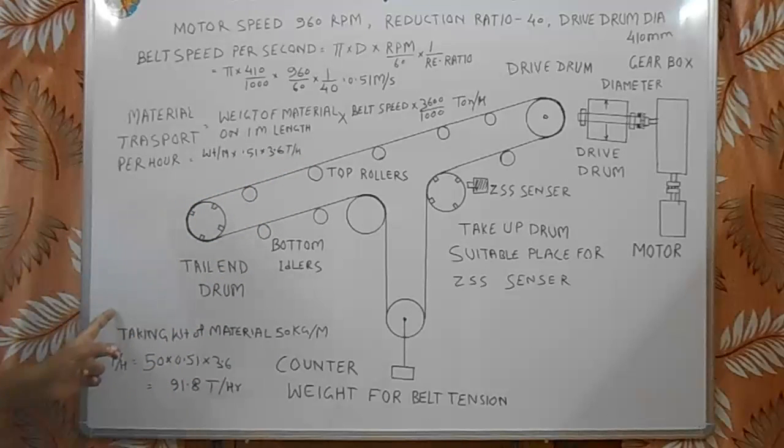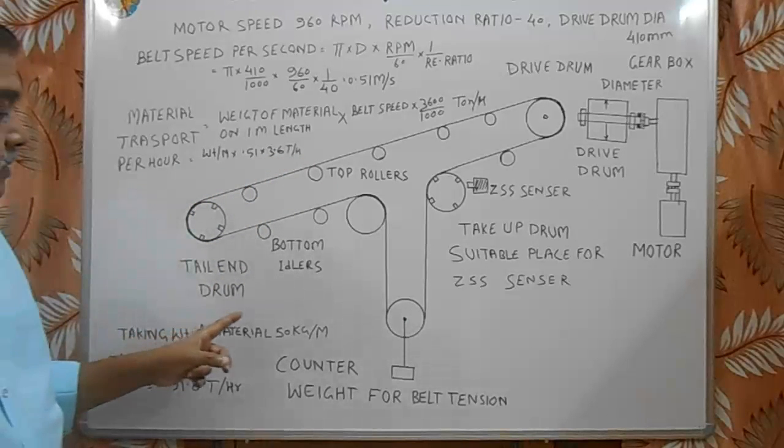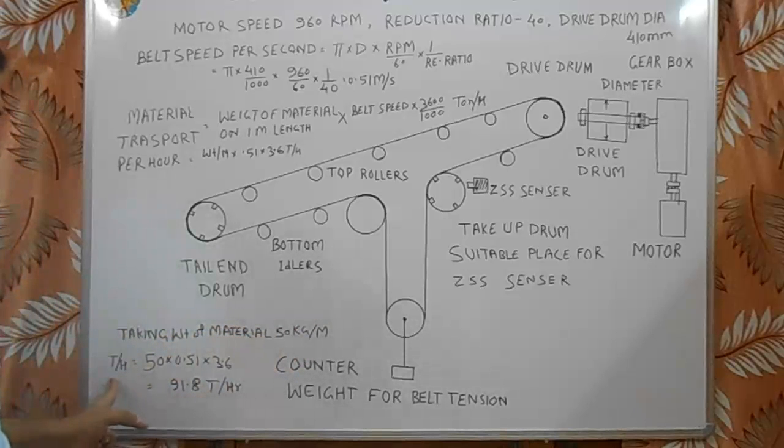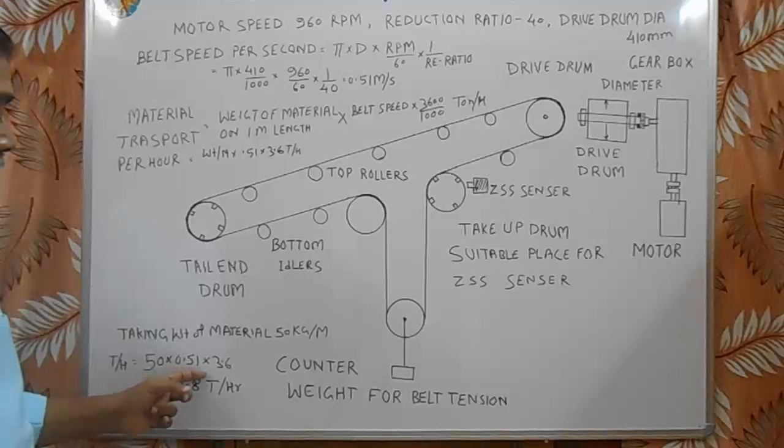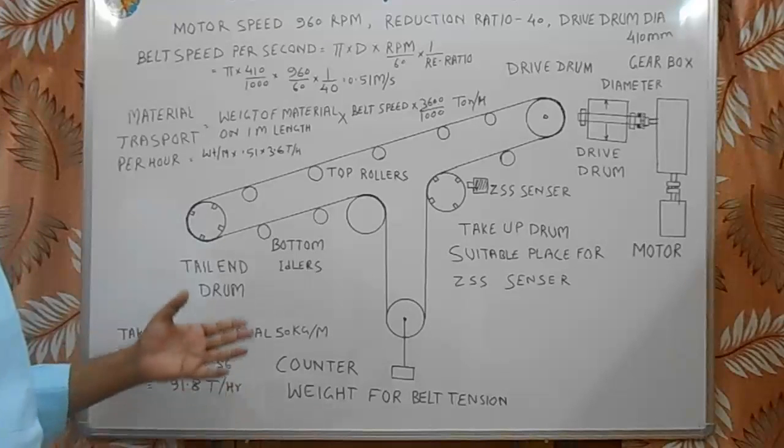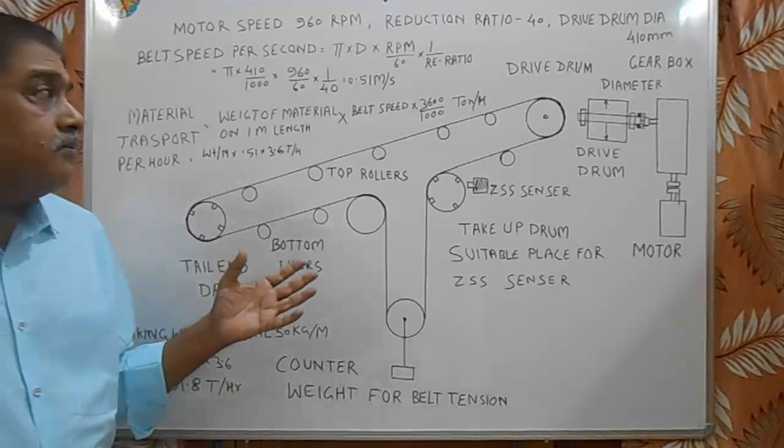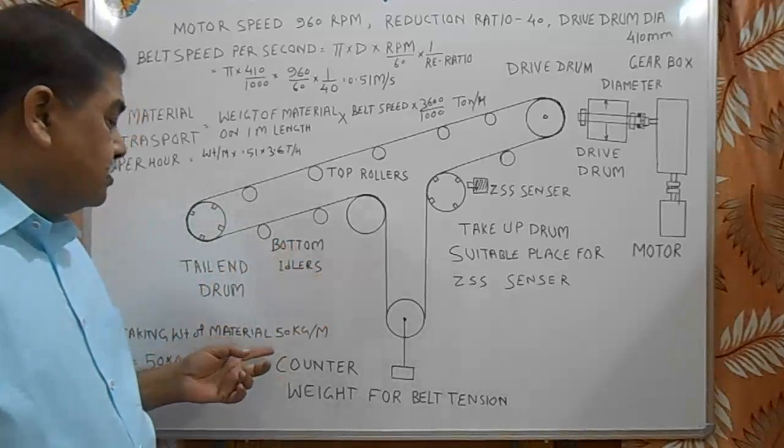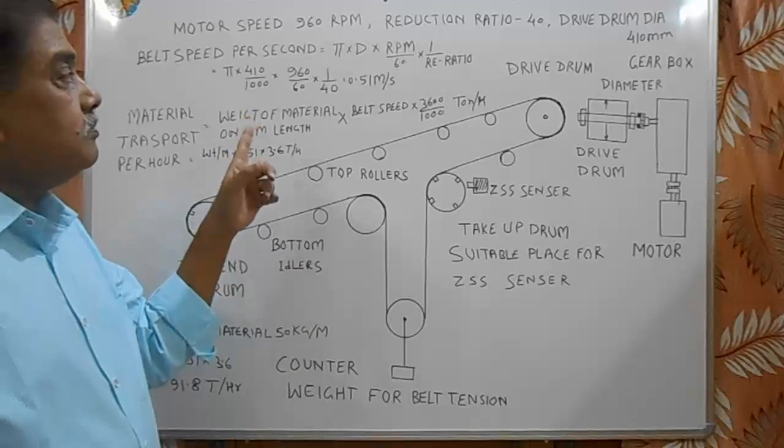Here we are taking weight of material 50 kg per meter. So calculating, weight per meter is equal to 50 into 0.51 into 3.6 is equal to 91.8 tons per hour. So for any belt conveyor we can calculate the material transported per hour with this formula.